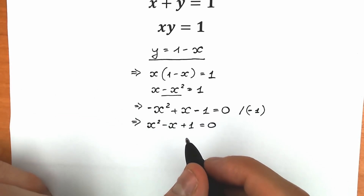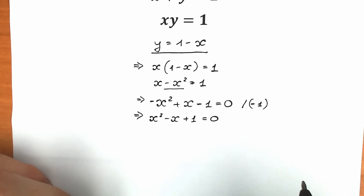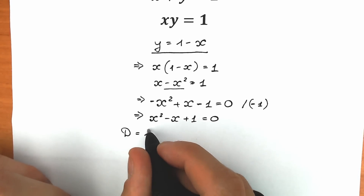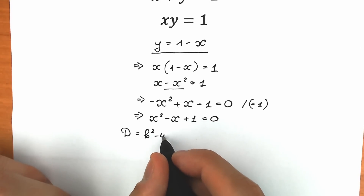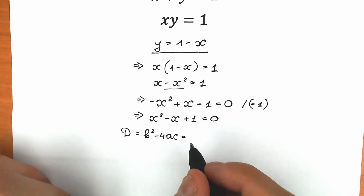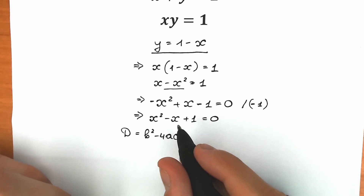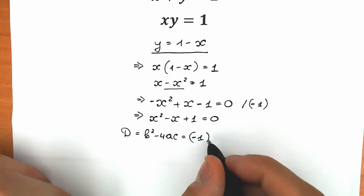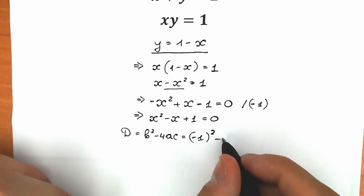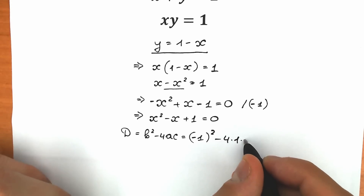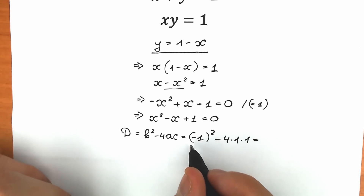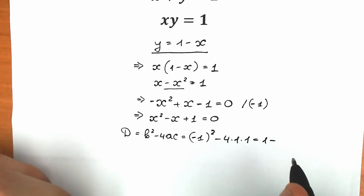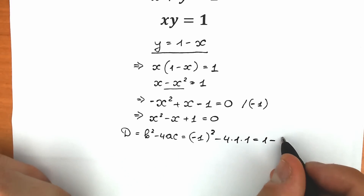We prefer to solve this with the discriminant, so let's use that formula. The discriminant equals the well-known formula b squared minus 4ac. Here b equals minus 1, so b squared equals (minus 1) squared equals 1. Then 1 minus 4 times 1 times 1 equals minus 3.